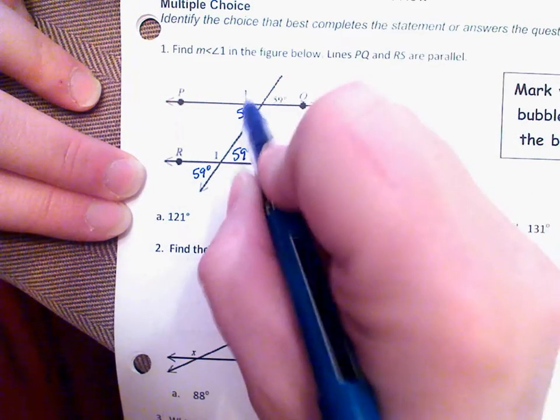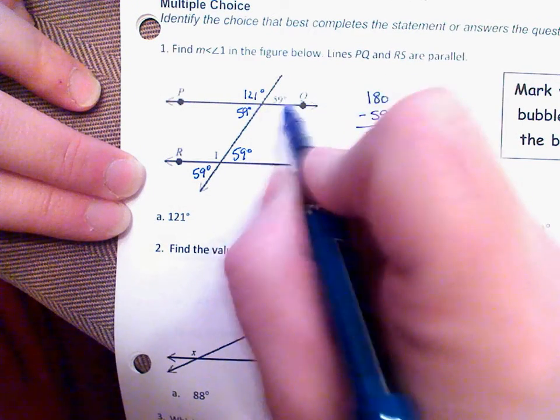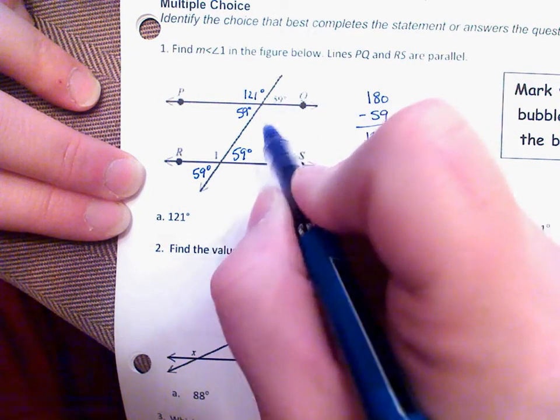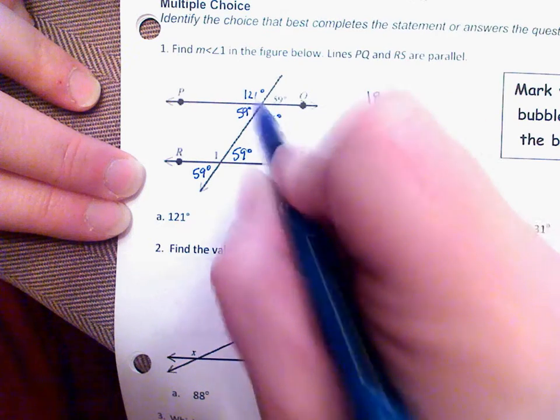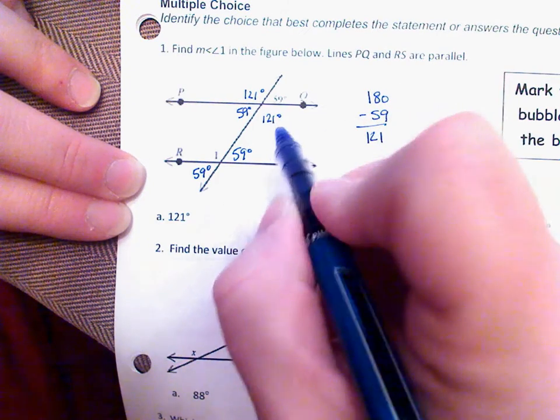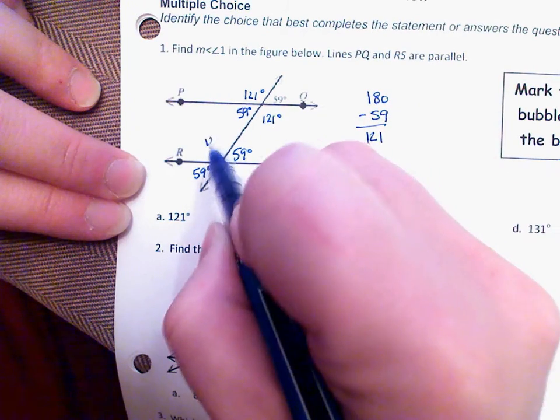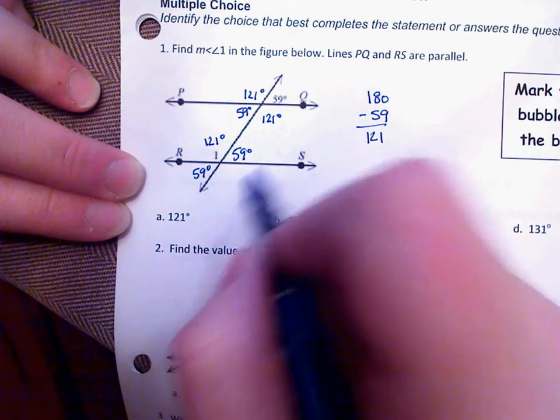So we know that this angle is 121. It's a linear pair. Here we have another linear pair. Of course, we know the vertical angles are congruent. We know alternate interior angles are congruent. So this obtuse angle is also 121 degrees.